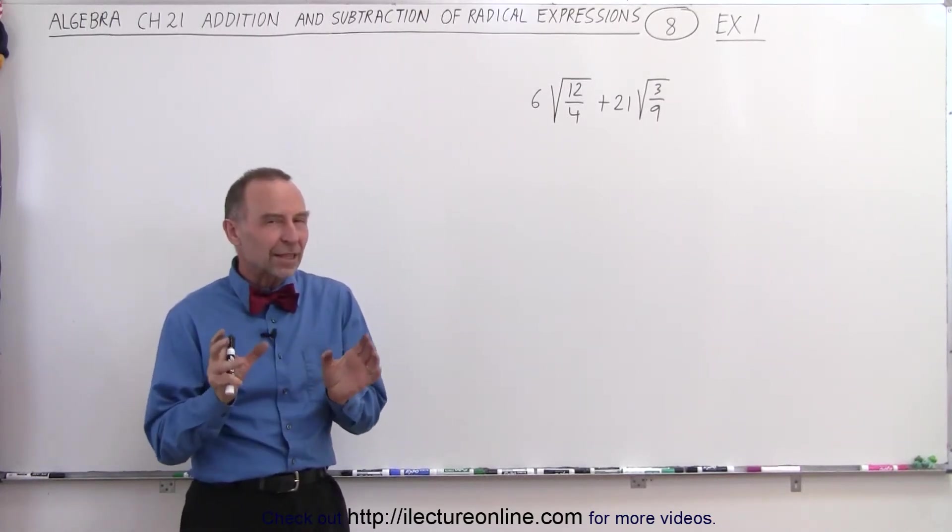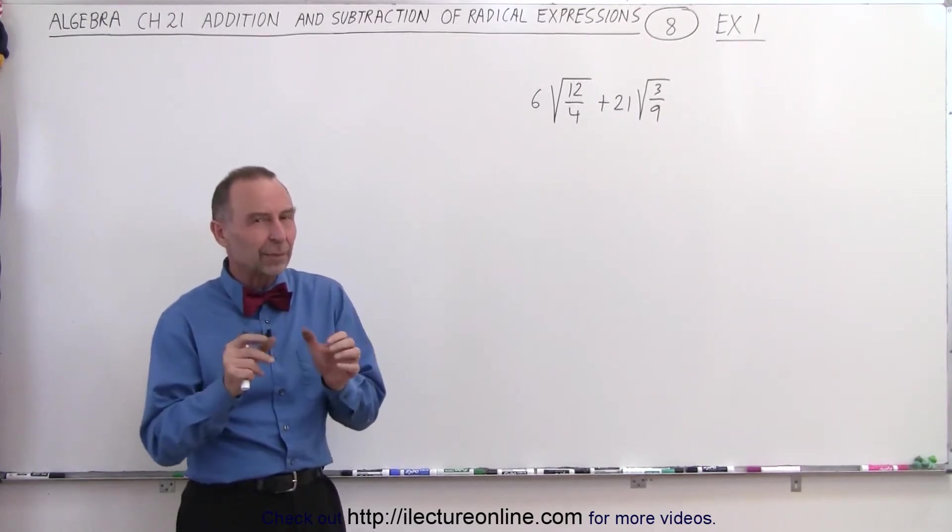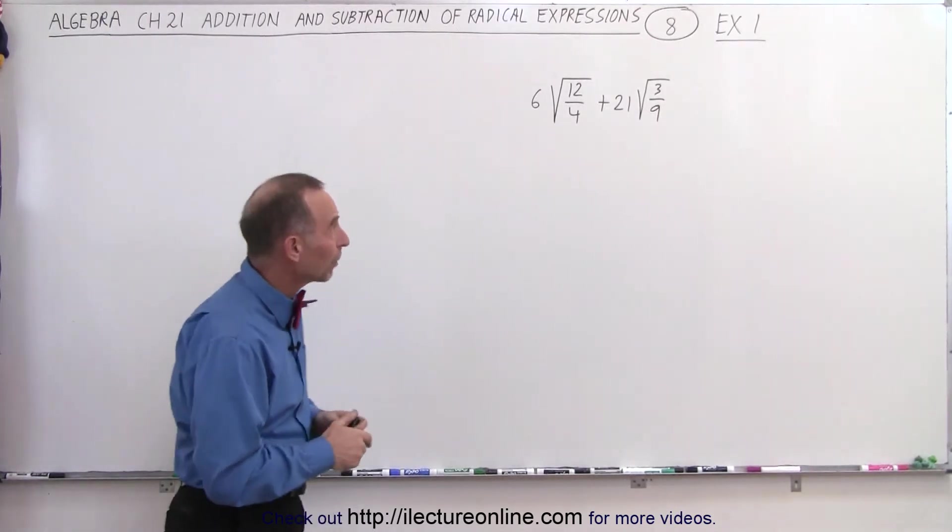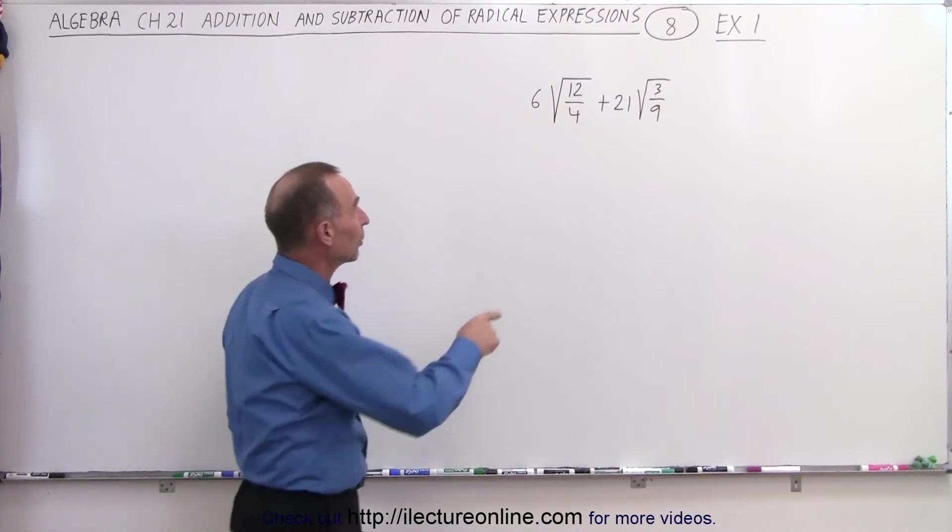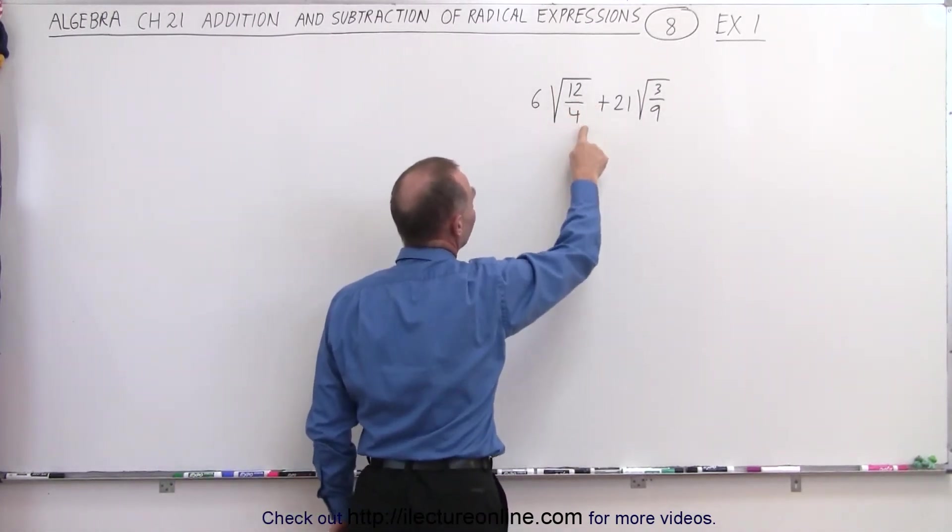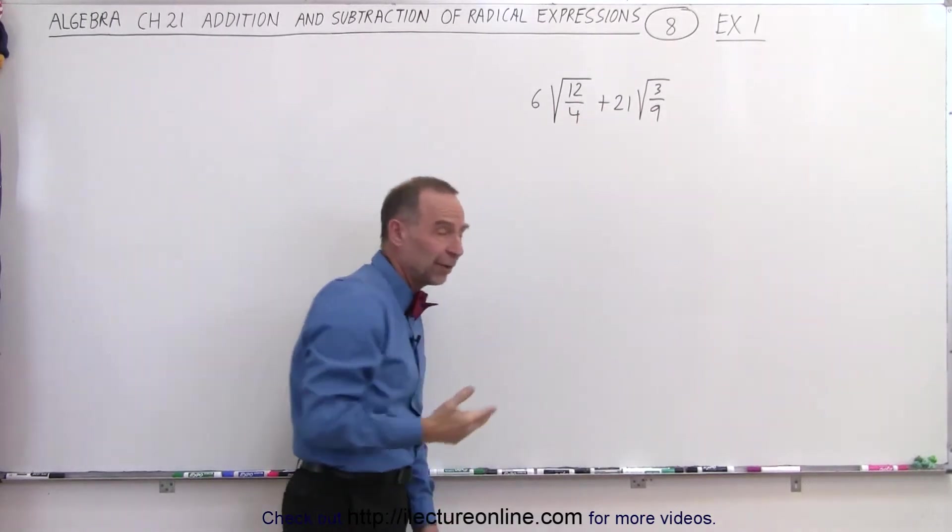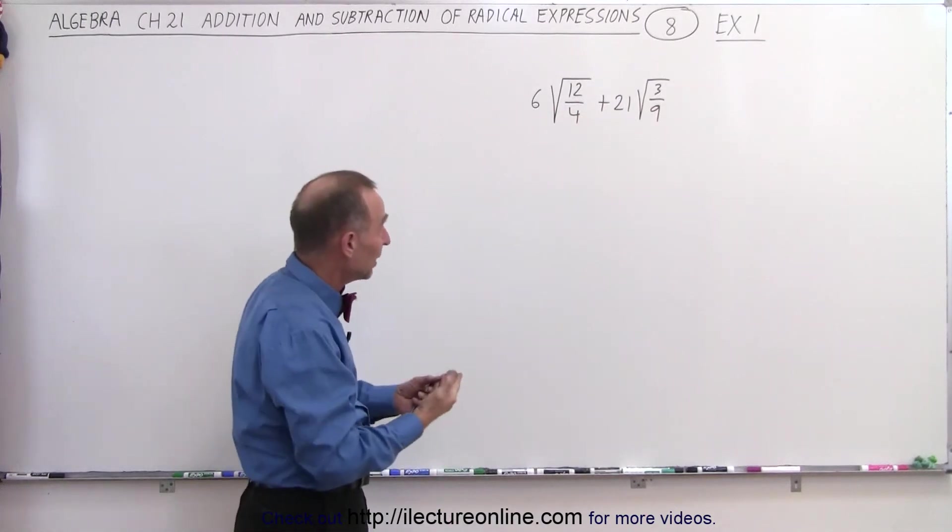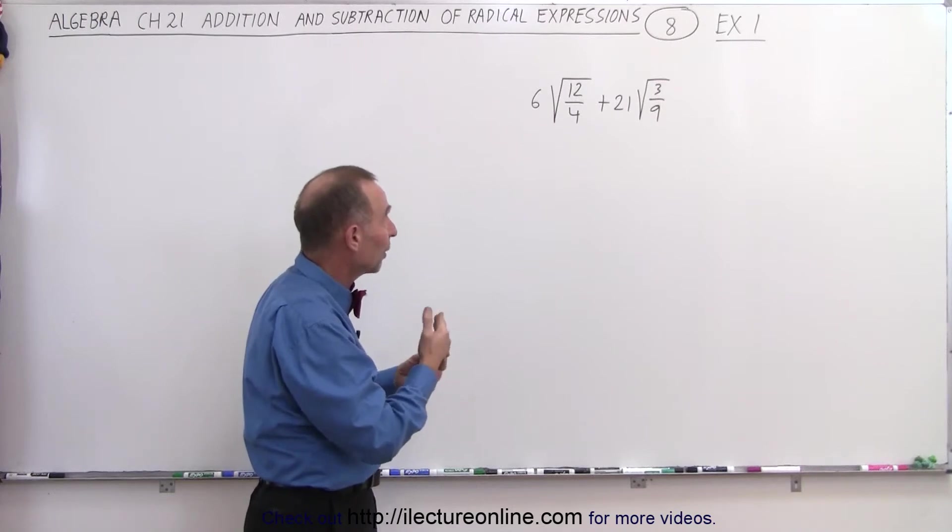Now sometimes you need to stop and think just a little bit before you start trying to work the problem. Here, when I look at these two terms on the left, I see 12 divided by 4. If I simply divide 12 by 4, I get 3 and I end up with 6 times the square root of 3.